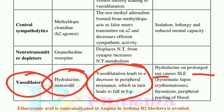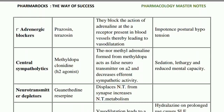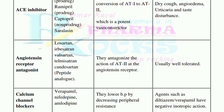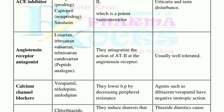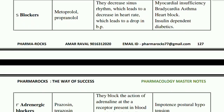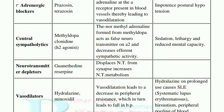So these are all the classes of antihypertensive drugs you need to remember: ACE inhibitors, angiotensin receptor antagonists, calcium channel blockers (CCBs), diuretics, beta blockers, alpha blockers, central sympatholytics, neurotransmitter depletors, and vasodilators — all mainly used in the treatment of hypertension to decrease blood pressure.